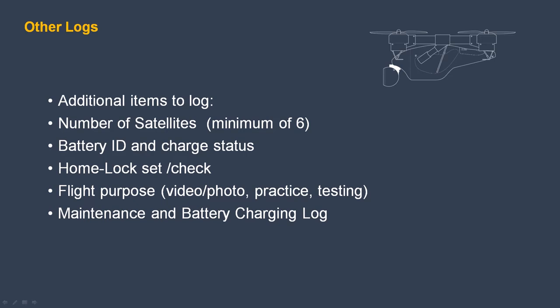Additional items to log include the number of satellites — remember we want a minimum of four, or better six — the battery ID and charge status, checking the home lock setting, the flight purpose such as video, photo, practice, or testing, maintenance, and battery charging log.